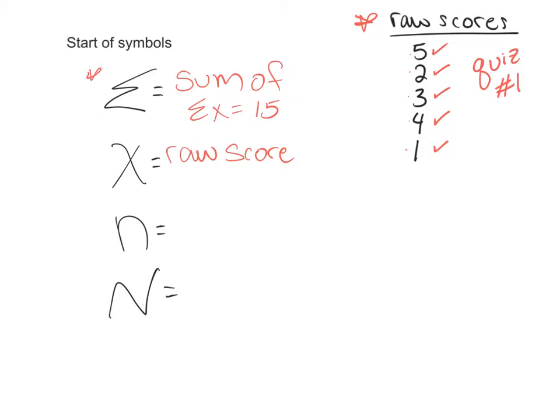So raw scores in this case would be: we have a five, a two, a three, a four, and a one. Those are all raw scores.